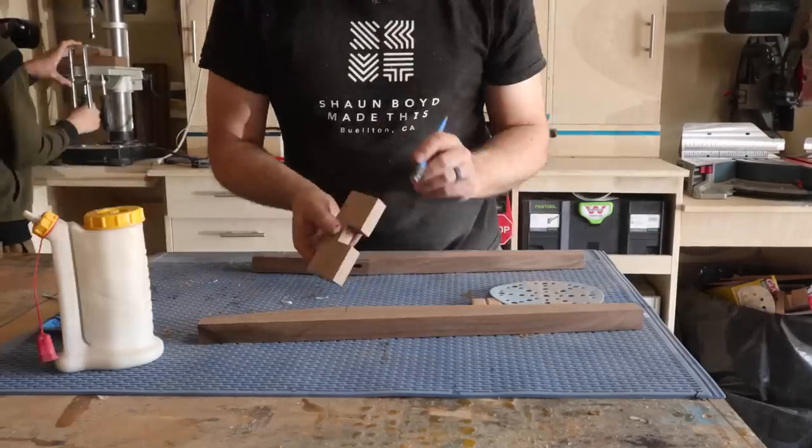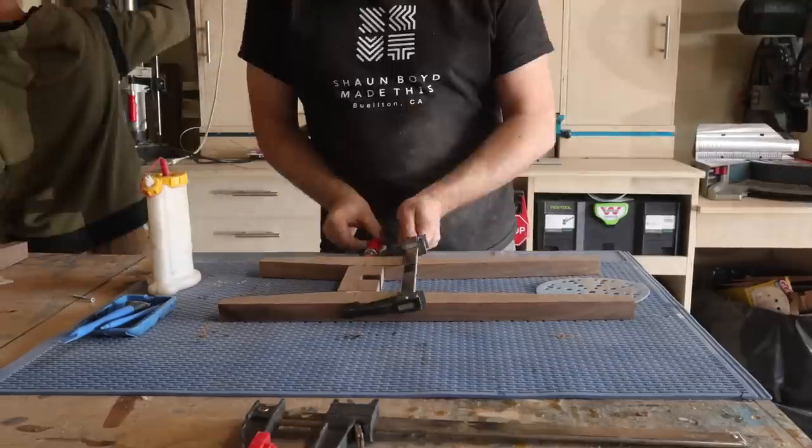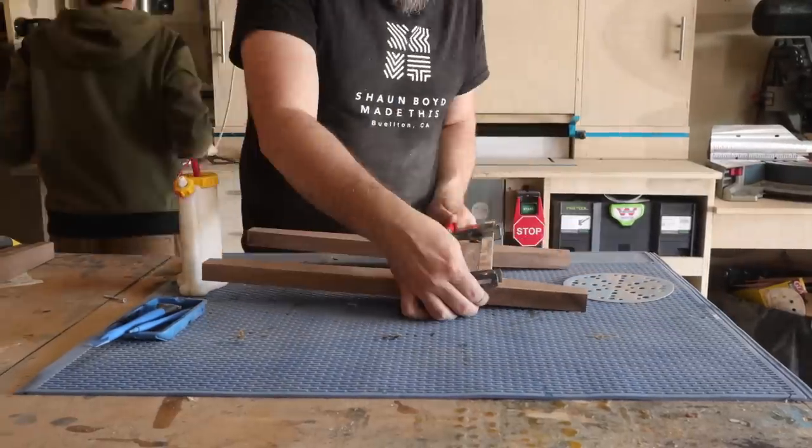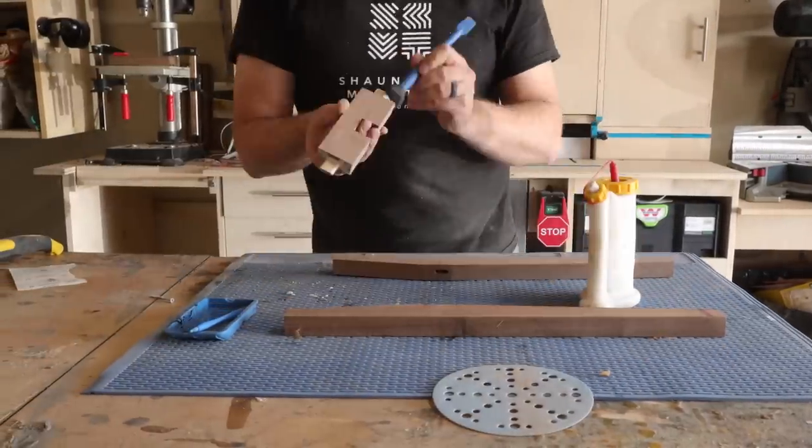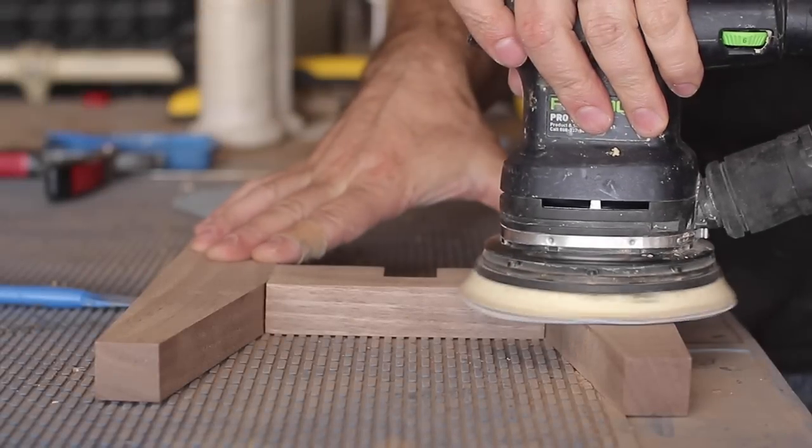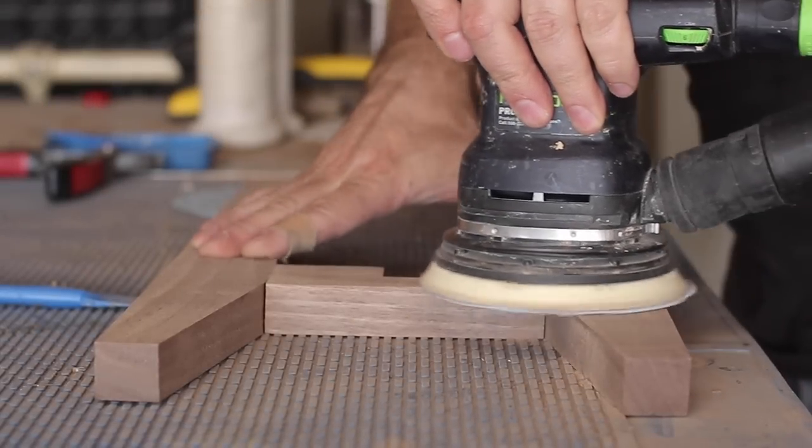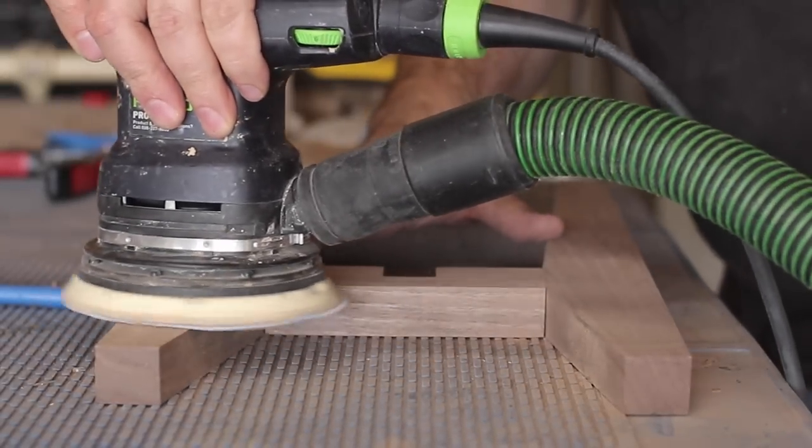After dry assembly, when I was happy with the fitment of everything, I started gluing and clamping everything together. Once all the glue was dry, I was able to come back and do all my finish sanding on all the pieces for the planter stands.